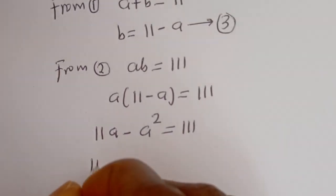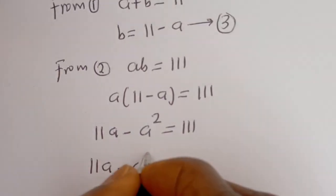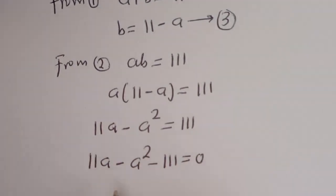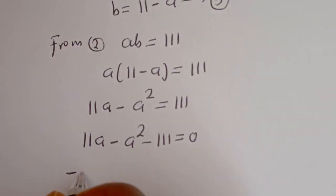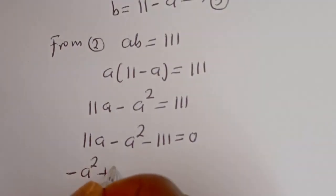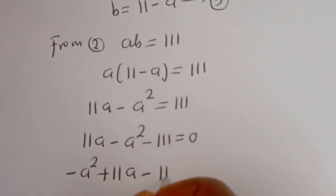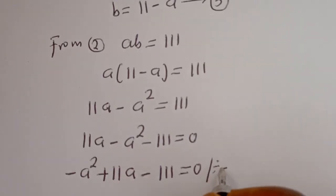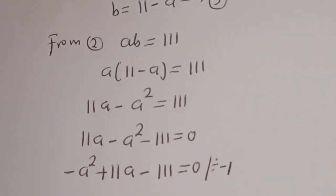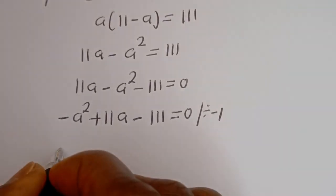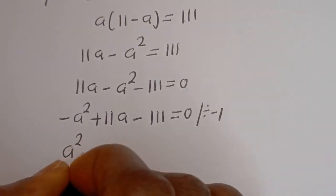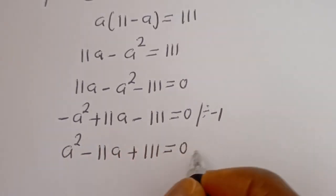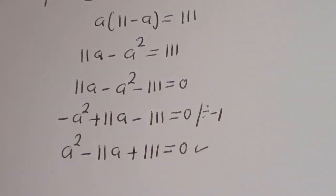Then we have 11A minus A squared minus 111 equals 0. Putting this in standard form: minus A squared plus 11A minus 111 equals 0, or A squared minus 11A plus 111 equals 0. This is a quadratic equation — let's solve it using the quadratic general formula.